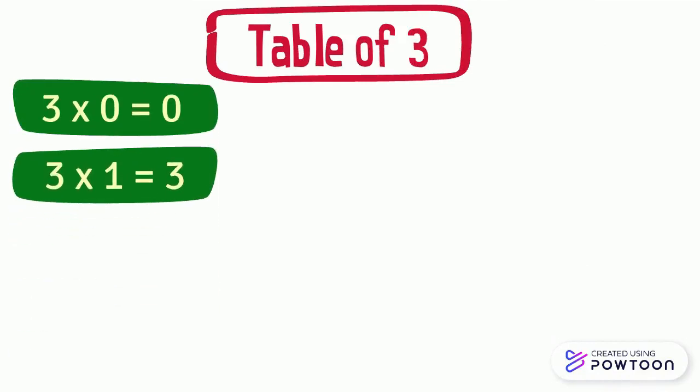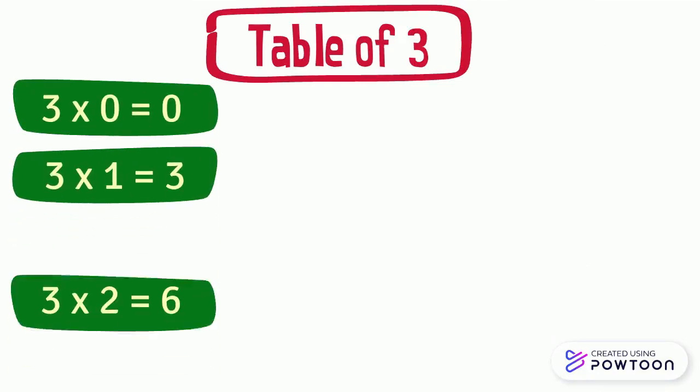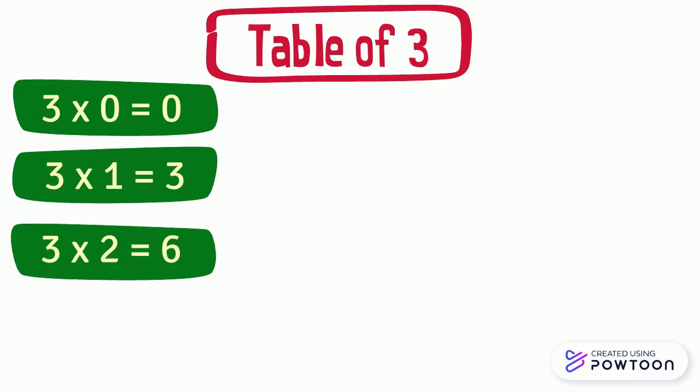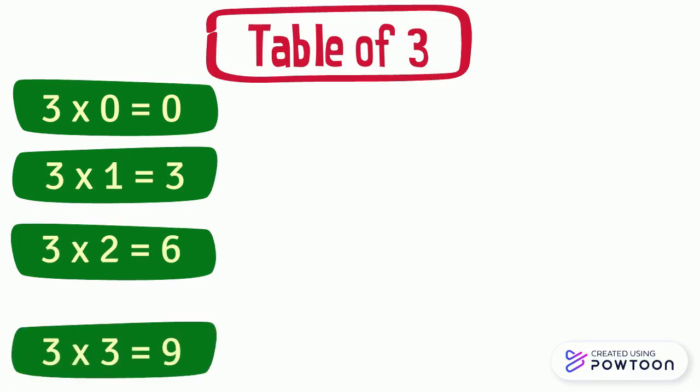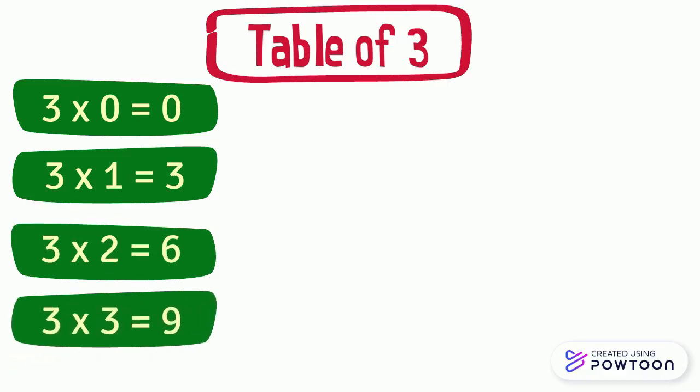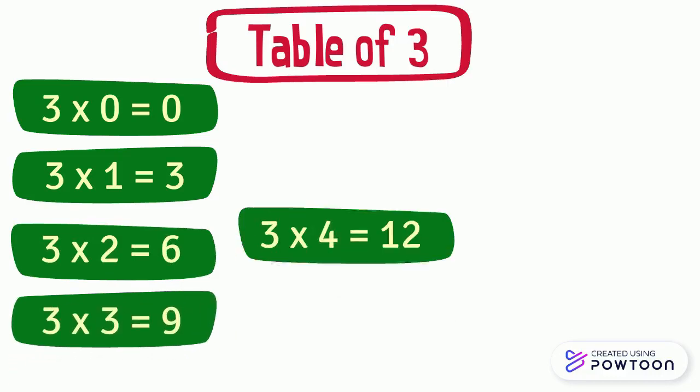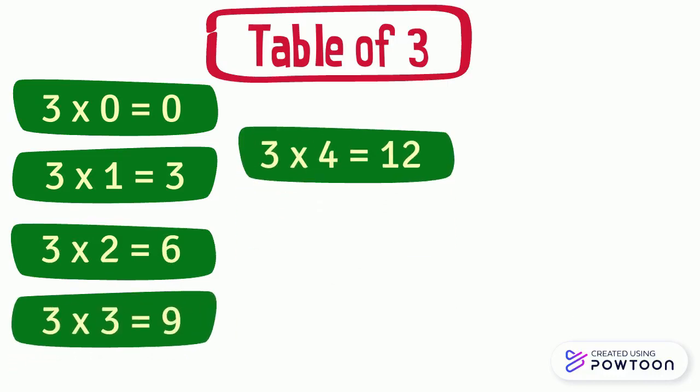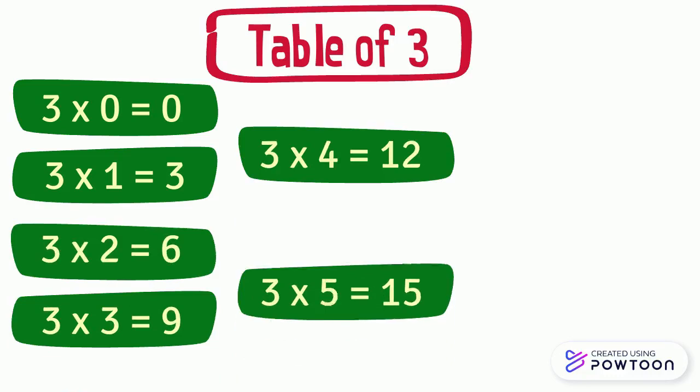Three times zero equals zero. Three times one equals three. Three times two equals six. Three times three equals nine. Three times four equals twelve. Three times five equals fifteen. Three times six equals eighteen.